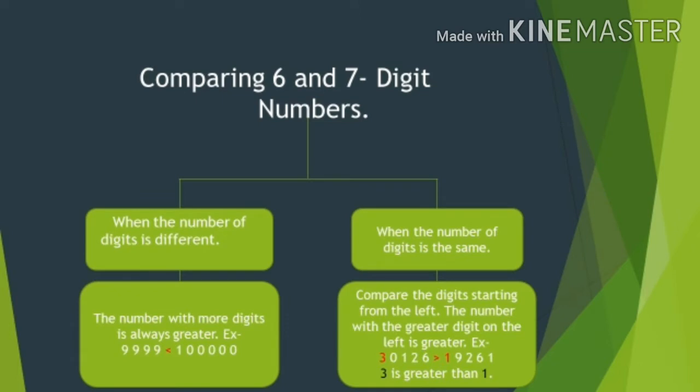Comparison of Numbers. In maths, to compare means to examine the differences between numbers, quantities, or values to decide if a number is greater than, smaller than, or equal to another quantity. Let's see the rules of comparing large numbers. Rule number one: if two numbers with different number of digits are given, then the number with more digits is always greater.